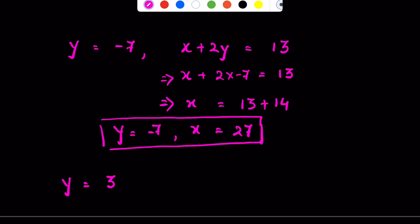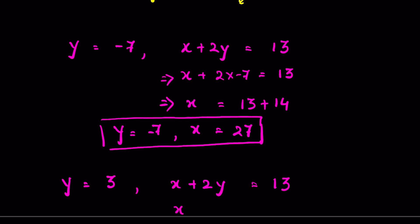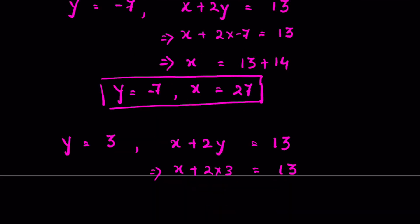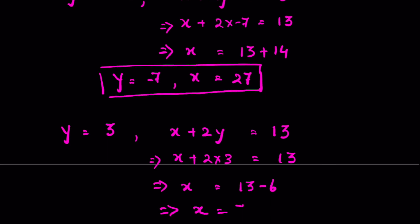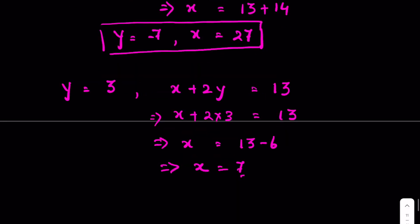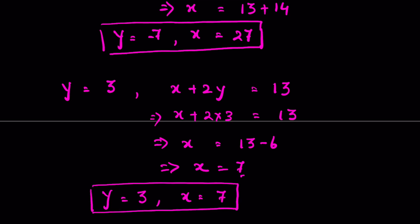When y is equal to 3, substituting into x plus 2y equals 13: x plus 2 times 3 equals 13, so x plus 6 equals 13, giving x equals 7. So the second solution is x equals 7, y equals 3. Like and subscribe, thanks for watching.